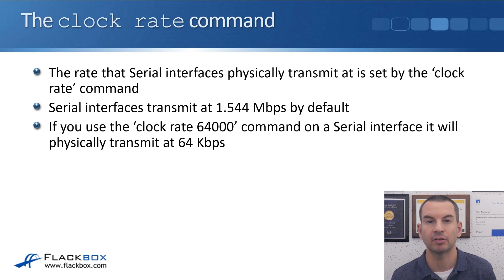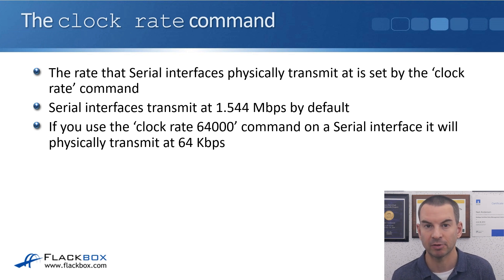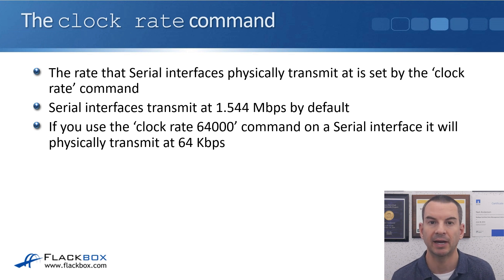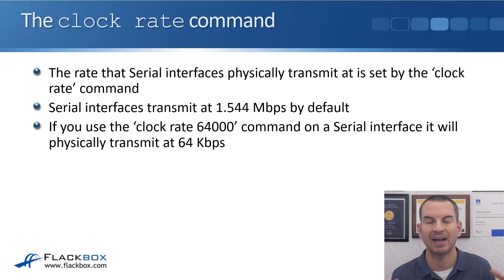If you use the clock rate 64000 command on a serial interface, it will physically transmit at 64 kilobits per second. So a serial interface transmits at 1.5 megabits per second by default, and you can change that by using the clock rate command to set a transmit rate in kilobits per second. This changes the physical speed of the interface, and it has to match on both sides of the link.